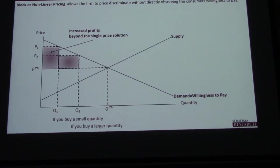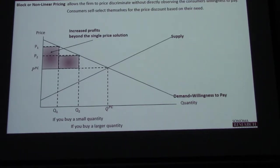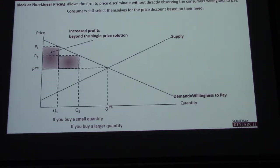There are people's willingness to pay. If you only need one you have a high willingness to pay, so you get the high price. Consumers self-select themselves for the price discount based on their needs.